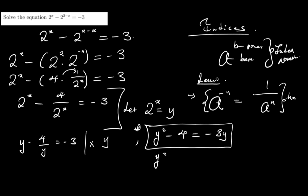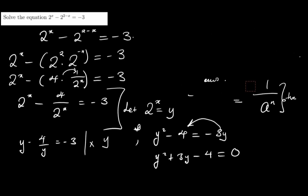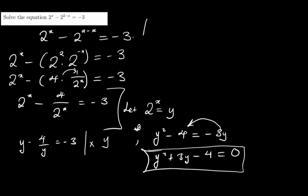I have y squared, and I can take the negative 3y to the other side — it becomes plus 3y — and then minus 4 equals zero. This is a quadratic equation. Now I'll erase some working to make space but I hope it doesn't get erased from your head. So we have y squared plus 3y minus 4 equals zero. Let's apply the sum and product technique — sum is 3, product is negative 4.